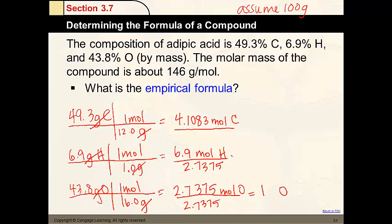6.9 divided by 2.7375 is 2.5 of hydrogen. And this one is 1.5 for carbon.